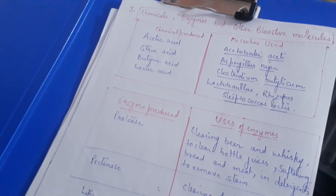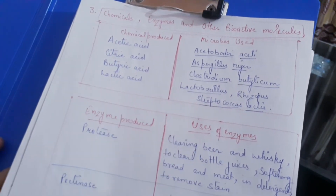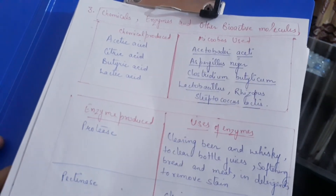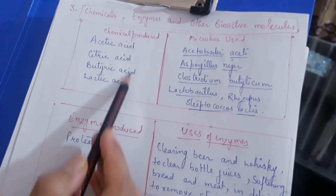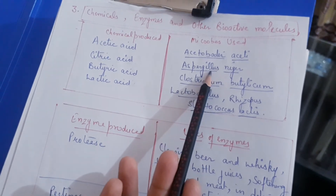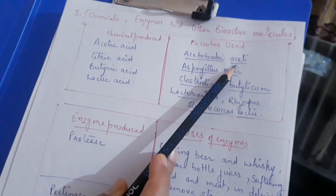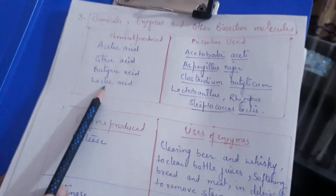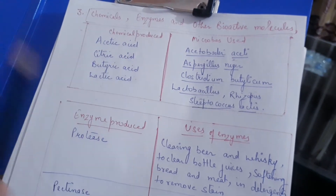The third category of industrial products includes chemicals made with help of microorganisms. Just remember these names: acetic acid, citric acid produced by Aspergillus niger, butyric acid by Clostridium botulicum, and lactic acid by Lactobacillus, Rhizopus, Streptococcus, and Lactococcus. These are the microorganisms used to prepare these industrial chemicals.